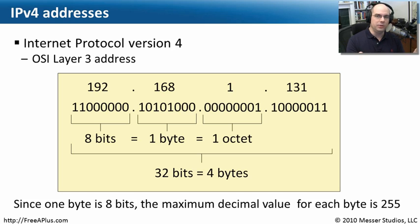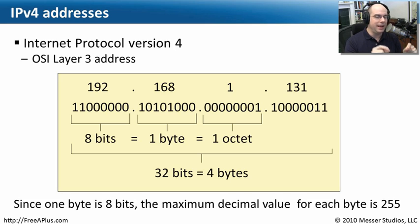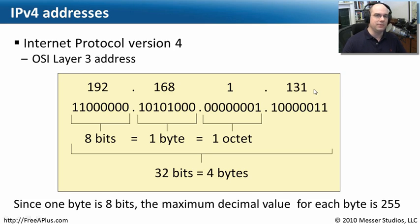Underneath the surface, computers don't deal with base 10 — they deal in binary, ones and zeros. So the computer sees 192.168.1.131 as a sequence of ones and zeros. For the A+ exam, you don't need to calculate the binary from IP addresses — that's needed for the Network+ exam — but it's important to know that underneath, it's all ones and zeros. Each section between the dots is called an octet because it's eight ones and zeros. You may also hear it referred to as a byte, which is how Intel-based computers see eight characters — a single byte, or eight bits.